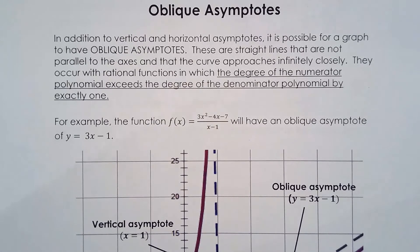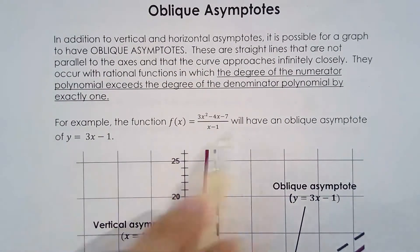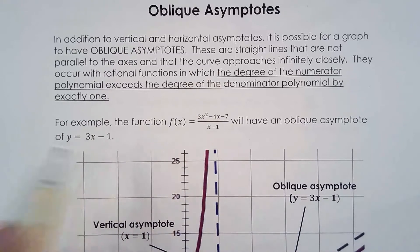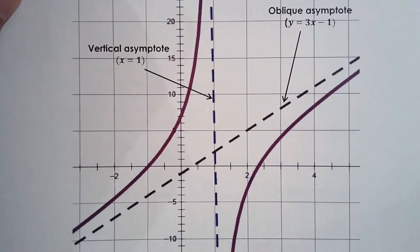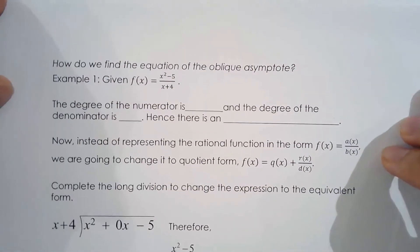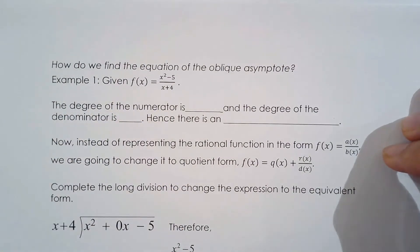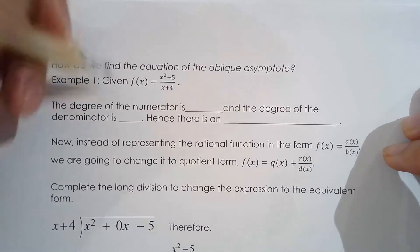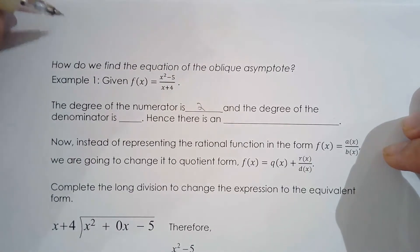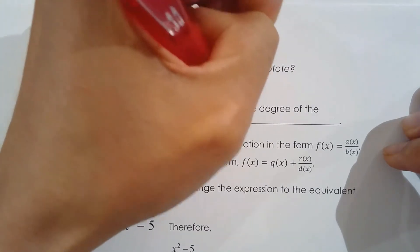Now we want to know how to find the equation of the oblique asymptote. Let's work with a different example: f(x) = (x² − 5) / (x + 4). The degree of the numerator is two and the degree of the denominator is one — hence, there is an oblique asymptote, also called a slant asymptote.